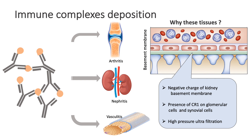The negative charge of the kidney basement membrane and vascular basement membrane attracts positively charged immune complexes. The presence of complement receptor 1 on glomerular cells and synovial cells also attracts immune complexes. Additionally, high pressure during ultrafiltration in the kidney glomerulus and in the joints that drives synovial fluid formation, as well as turbulence in blood vessels, triggers further deposition of immune complexes.